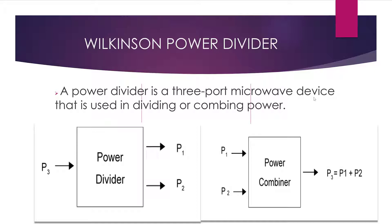Before we start the design, it is very important for us to know a little about a power divider and what it does. A power divider is a three-port microwave device that is used in dividing or combining power. Looking at this figure, we can see P3 entering and P1 and P2 going out. For a power divider acting as a power divider, power from P3 will equally split between P1 and P2. Ideally, if it is acting as a power combiner, the power at port 1 and port 2 will combine and appear at port 3 as a single power. So a power divider can be used for combining or dividing power.